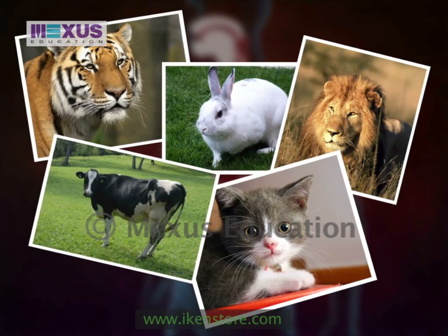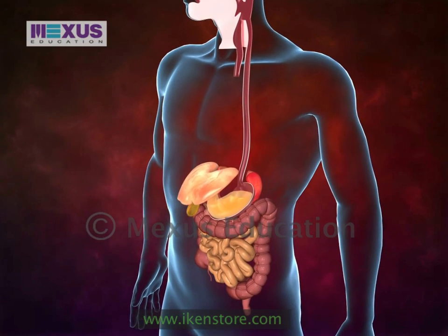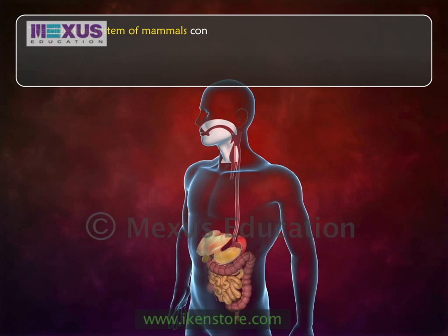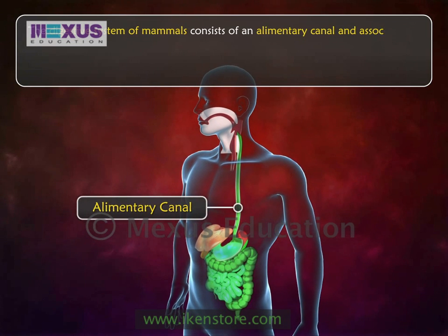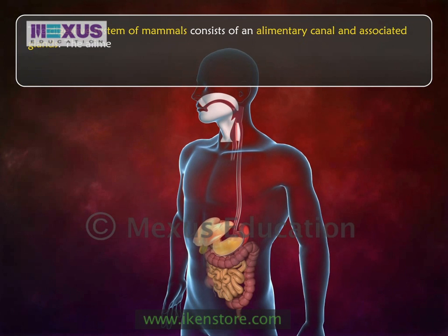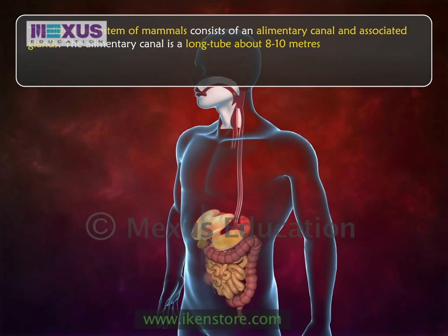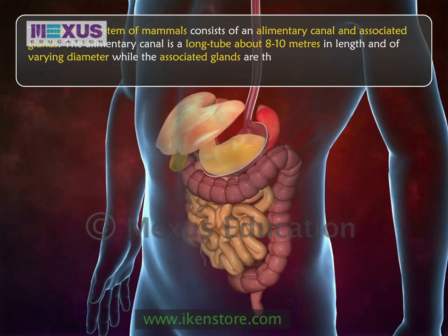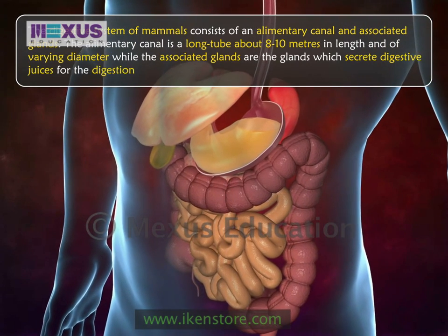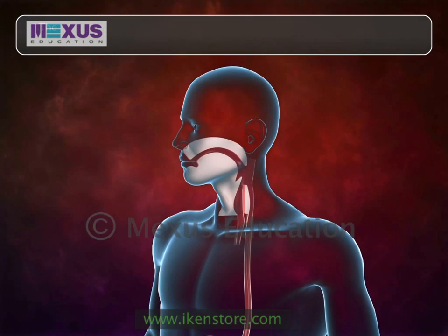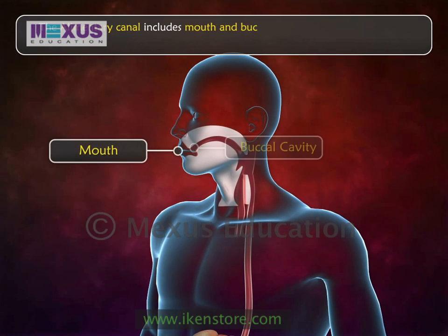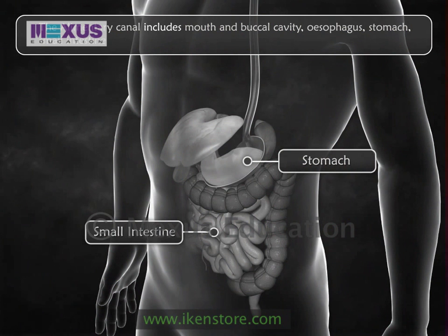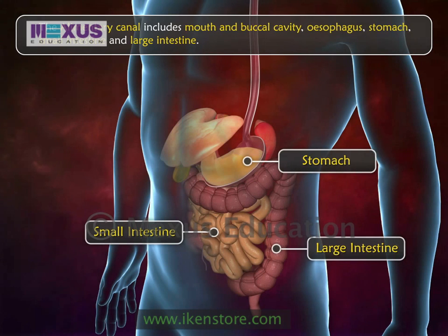The digestive system has basic similarities in structure and function but differs widely in different animals. Let us discuss the digestive system of mammals, using the human digestive system as an example. The digestive system of mammals consists of an alimentary canal and associated glands. The alimentary canal is a long tube about 8 to 10 meters in length and of varying diameter, while the associated glands secrete digestive juices for digestion.